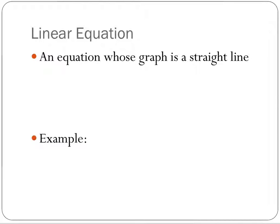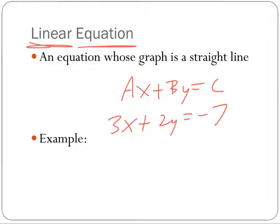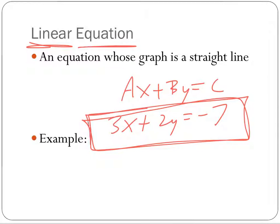So a linear equation is an equation whose graph is a straight line, has linear equation. So there's lots of forms they can take. There's standard form, which is ax plus by equals c. It might look something like 3x plus 2y equals negative 7. We can put it in slope-intercept form. And we'll talk about that in the next slide. But again, it's any line or any graph, any equation, rather, that creates a straight line when you graph it.